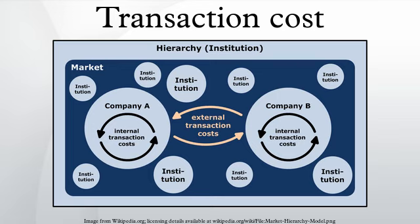But the smallest unit of the institutional economists is a unit of activity — a transaction, with its participants. Transactions intervene between the labor of the classic economists and the pleasures of the hedonic economists, simply because it is society that controls access to the forces of nature, and transactions are not the exchange of commodities, but the alienation and acquisition between individuals of the rights of property and liberty created by society, which must therefore be negotiated between the parties concerned before labor can produce, or consumers can consume, or commodities be physically exchanged.